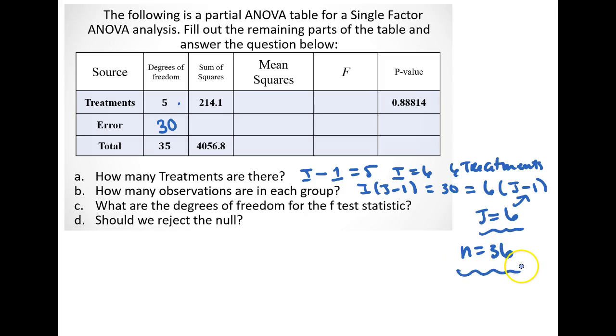And that makes sense because the total degrees of freedom happen to be N minus 1, the total number of observations in the group minus 1. So this makes sense.